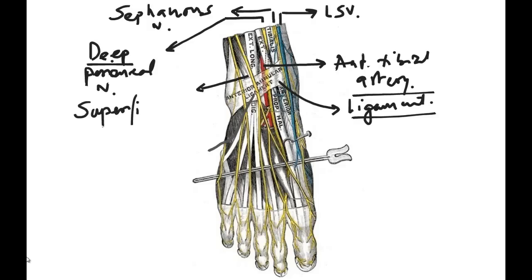Unlike the deep peroneal nerve, the superficial peroneal nerve lies above the ligament in an anterolateral position. To block the superficial peroneal nerve, all you need to do is give subcutaneous infiltration from the extensor digitorum longus tendon to about the lateral malleolus. Similarly, the saphenous vein and saphenous nerve also lie above the ligament, so parasaphenous subcutaneous injection above and around the medial malleolus should reliably block the saphenous nerve.